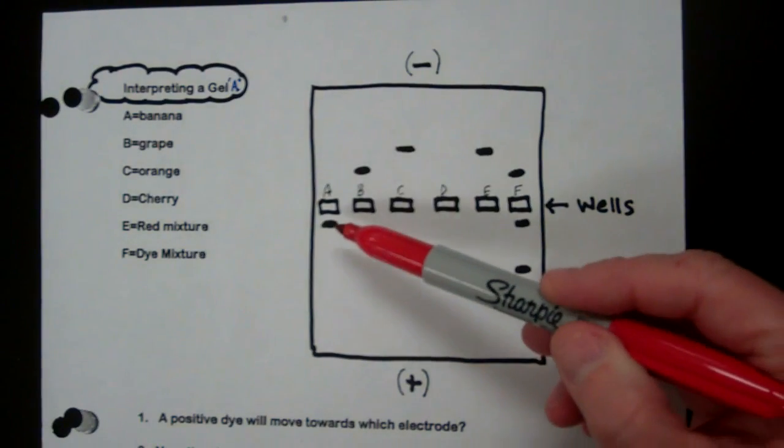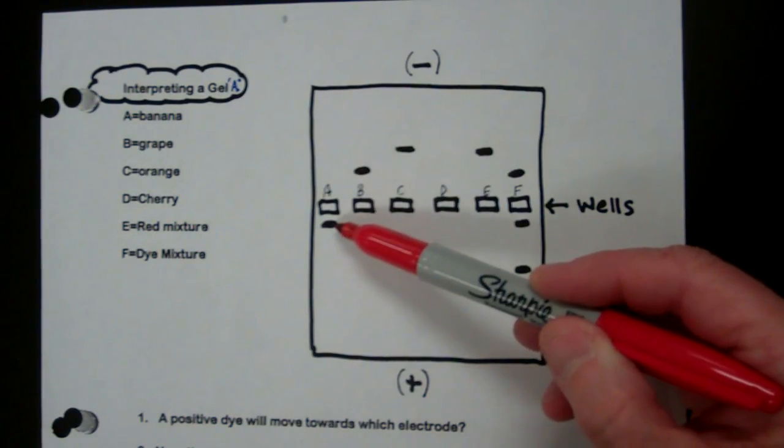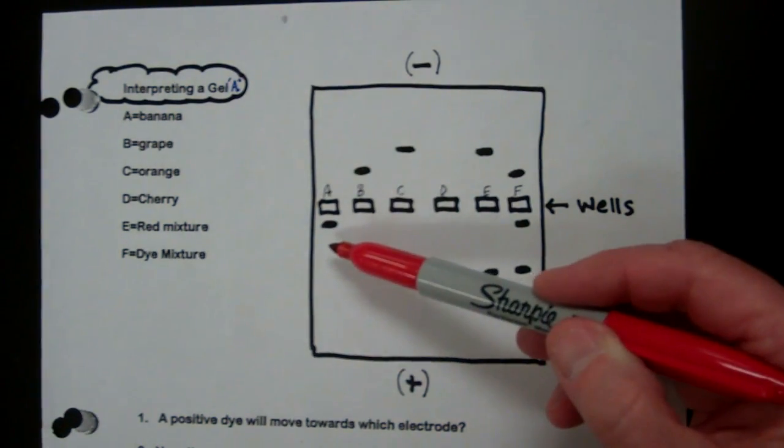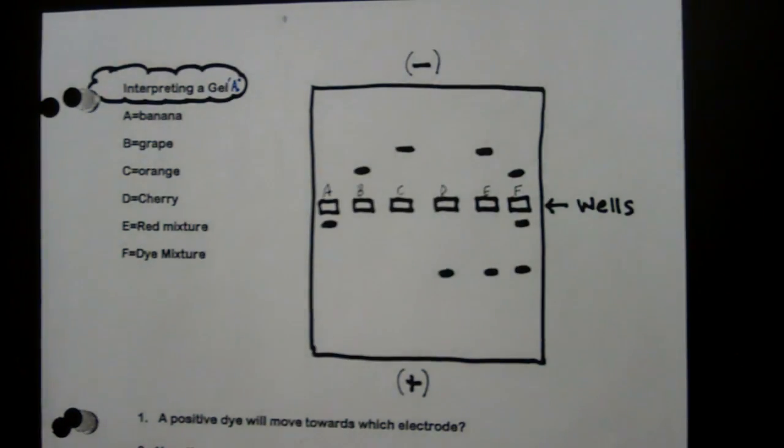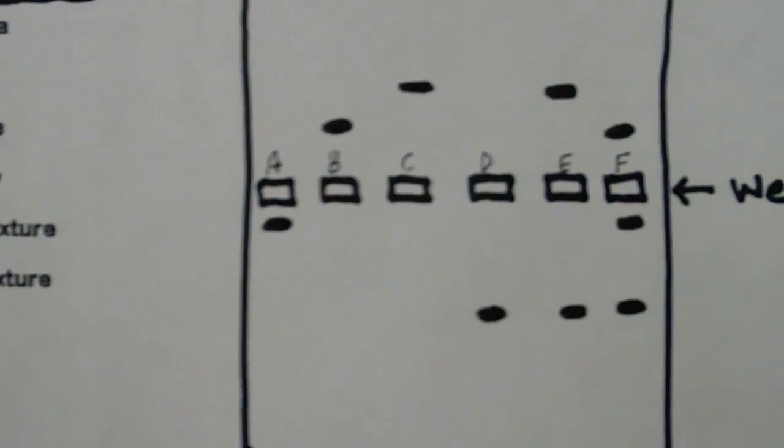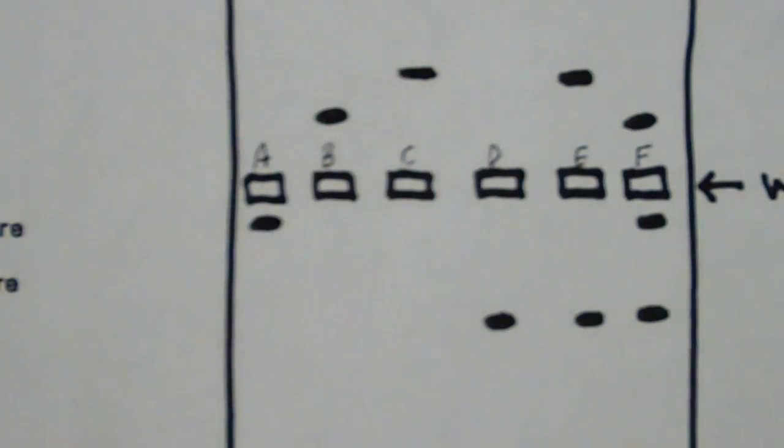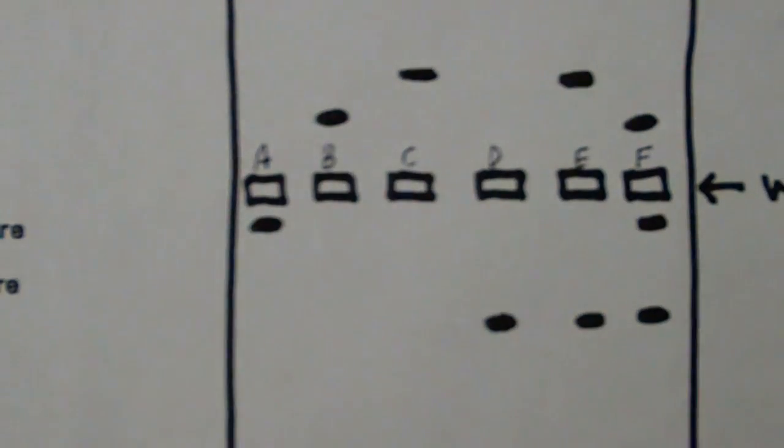Now, so banana moved a little bit. What does that mean about its size? Well, it took a long time to move, so that must mean that it's a pretty big molecule. It doesn't easily travel.